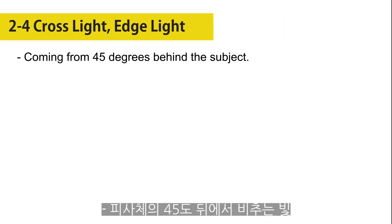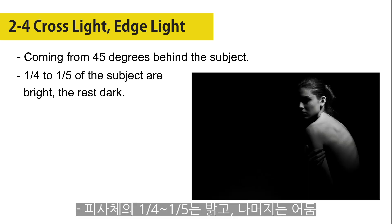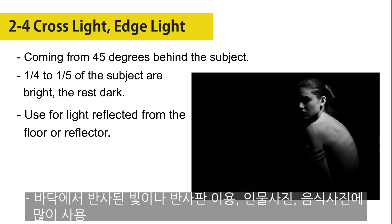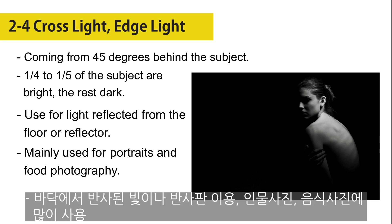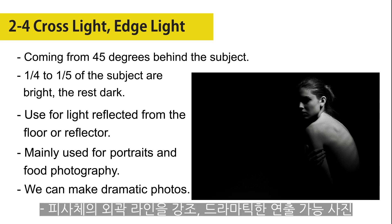Cross light comes from 45 degrees behind the subject. One fourth to one fifth of the subject is bright, the rest dark. If possible, use fill light reflected from the floor or a reflector. It's mainly used for portraits and food photography. We can make dramatic photos, emphasizing the outline of the subject.